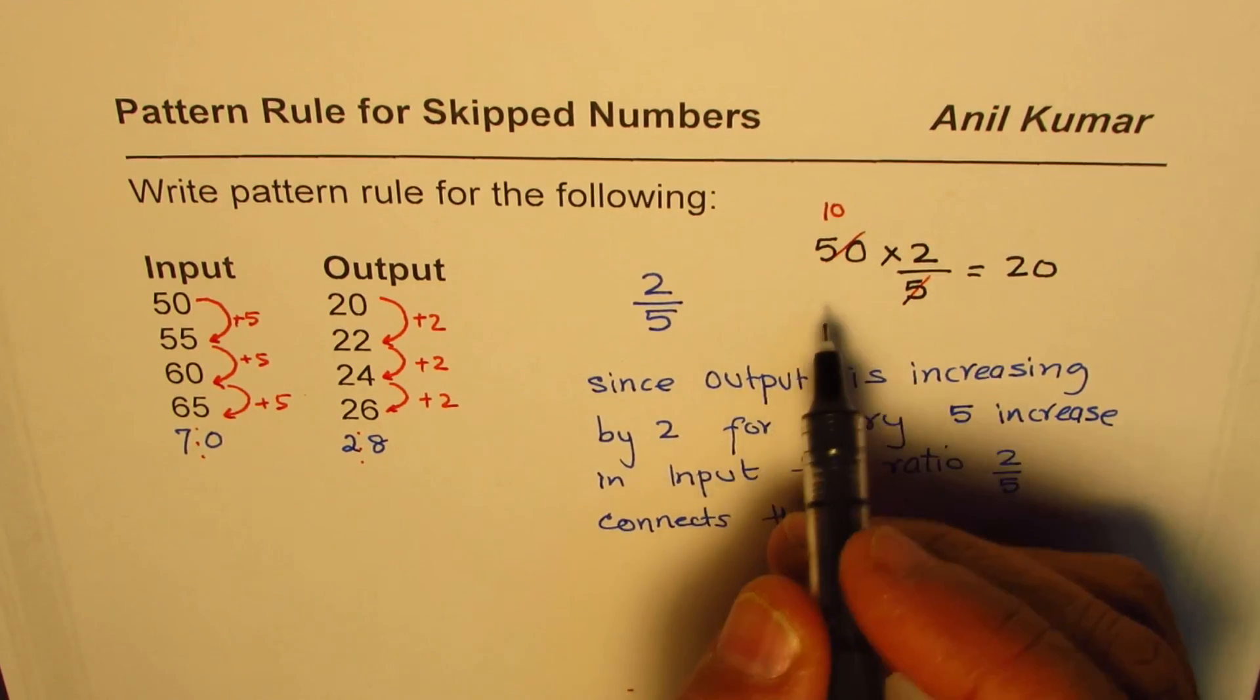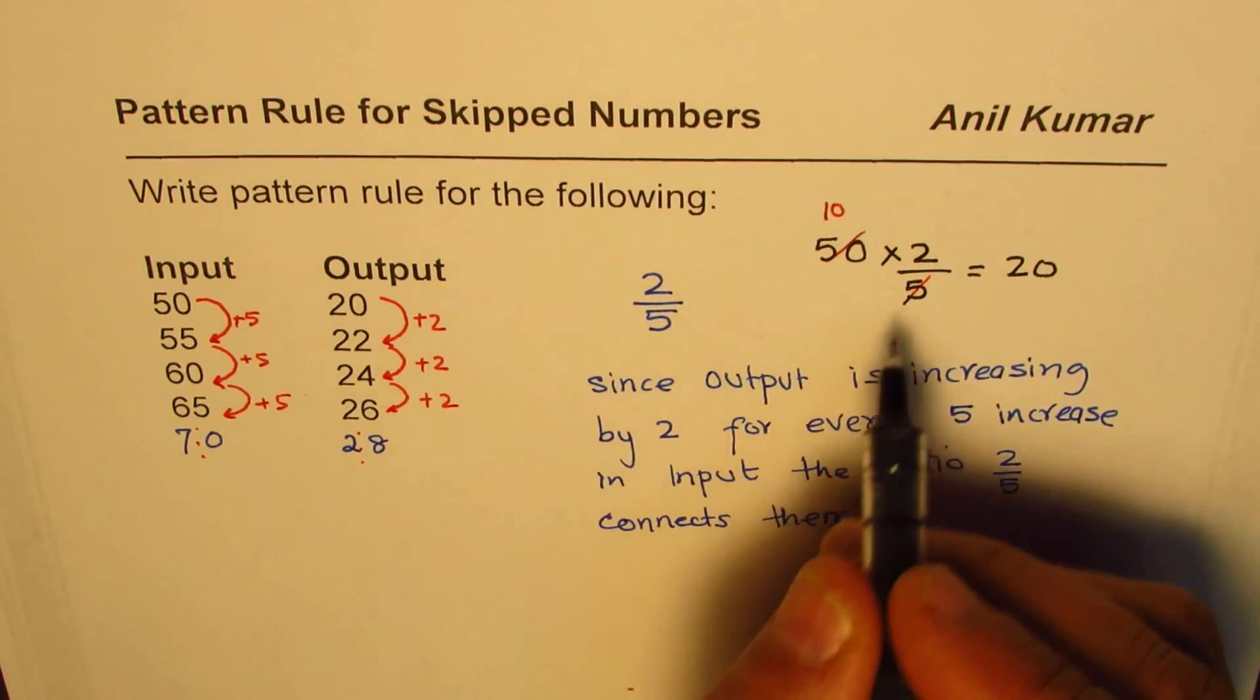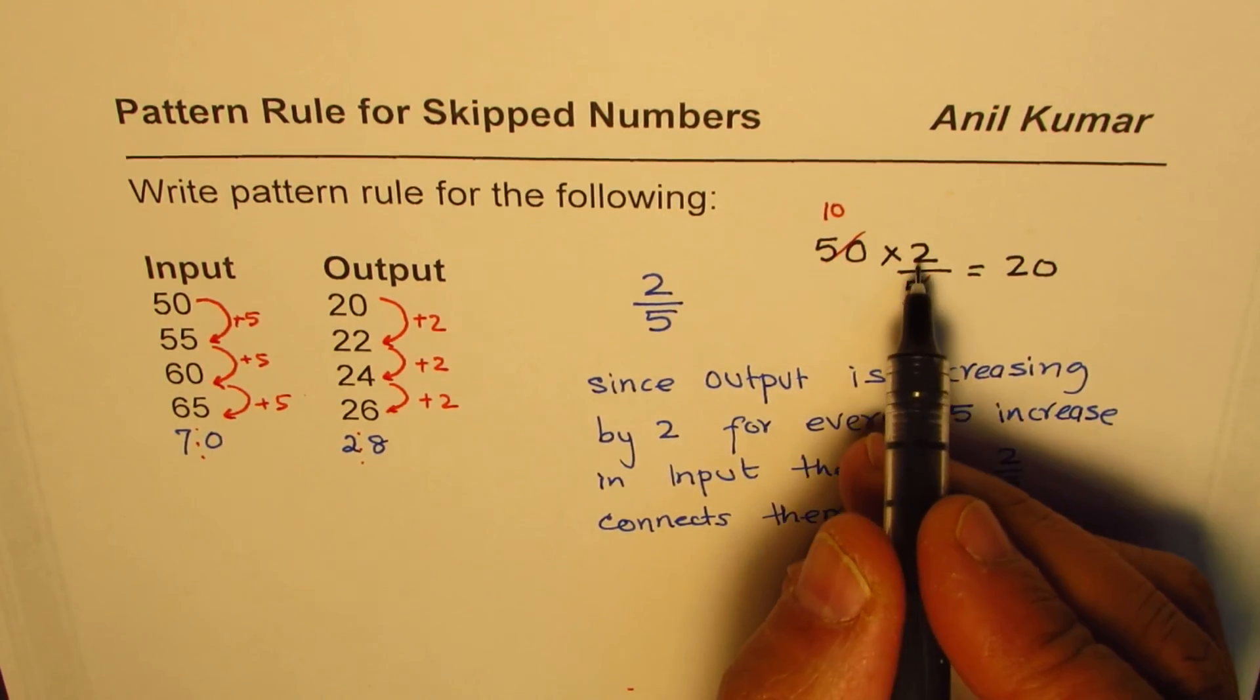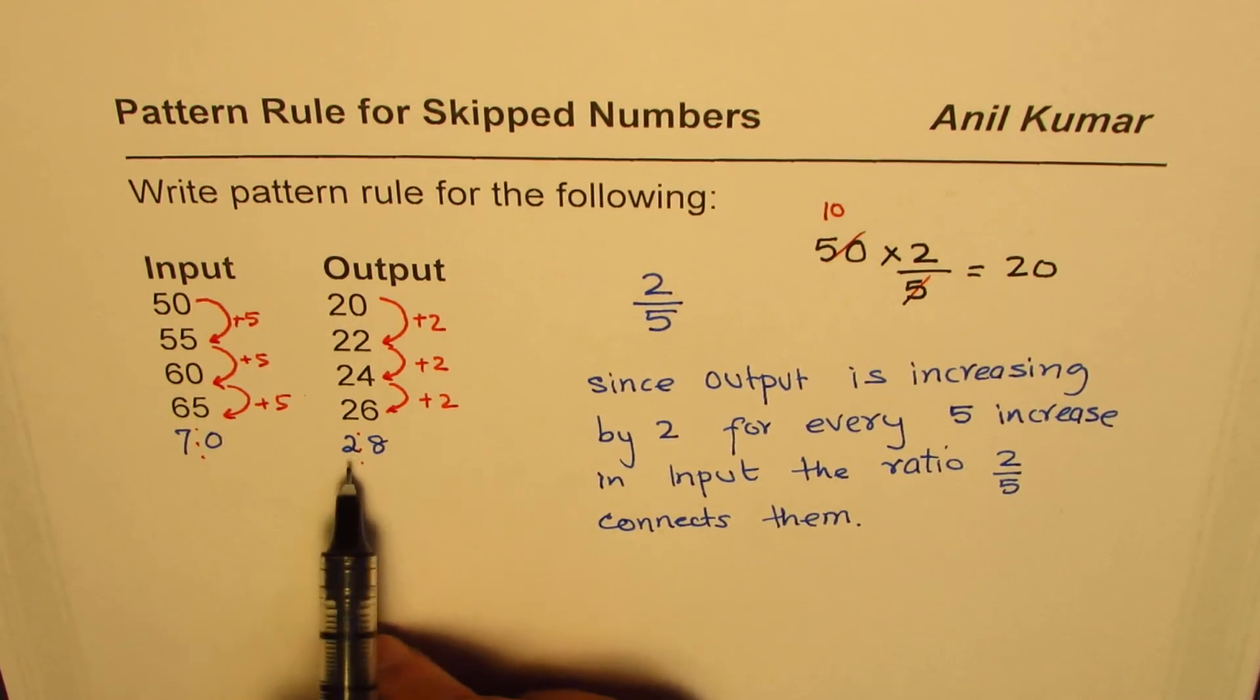So for 70 we could divide by 5 and then multiply by 2, and we will get 28. You can test it out - it works.